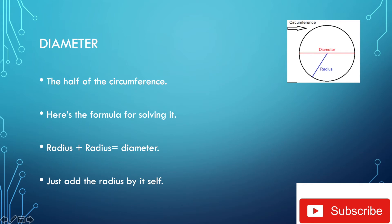Next, we have the diameter. It's the half of the circumference. Here's the formula for solving it. As you can see in this picture right here, this is the diameter. Radius plus radius is equal to the diameter. For solving the diameter, just remember: add the radius by itself.